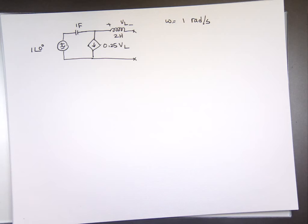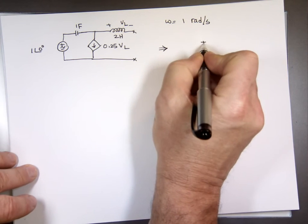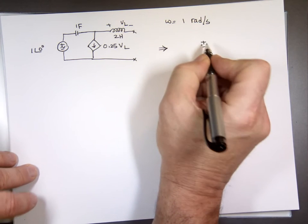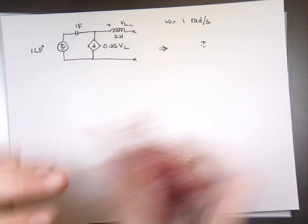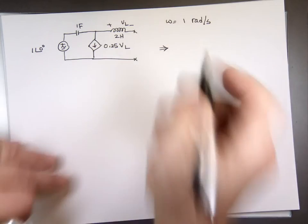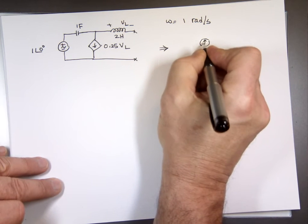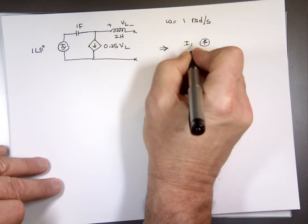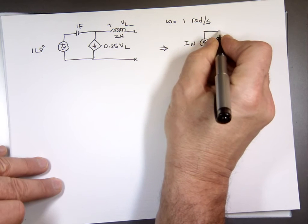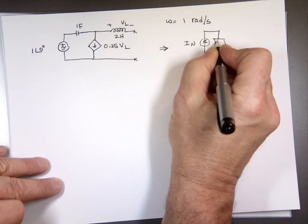The question is to find the Norton equivalent of this network. Take this one and replace it — not a voltage — it's a Norton equivalent, so replace that with a current source, I_Norton, in parallel with an impedance Z_Norton.